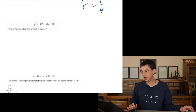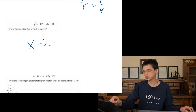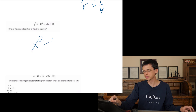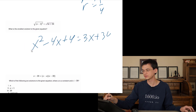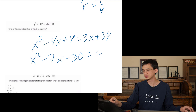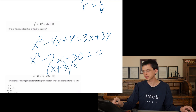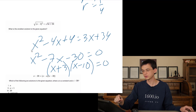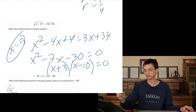We have a radical equation. Square both sides. We get (x minus 2) squared equals the right side: x squared minus 4x plus 4 equals 3x plus 34. Subtract through: x squared minus 7x minus 30 equals 0. This factors to (x plus 3)(x minus 10). The smallest solution is x equals negative 3.